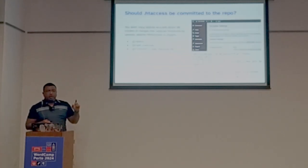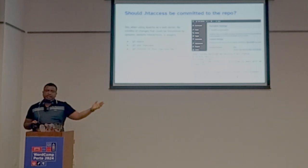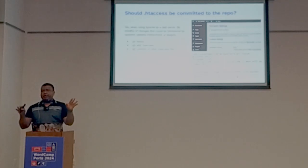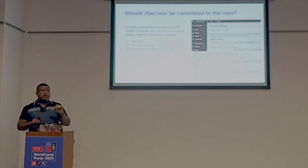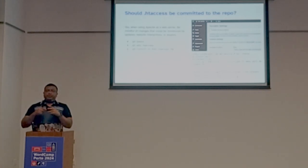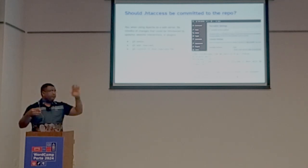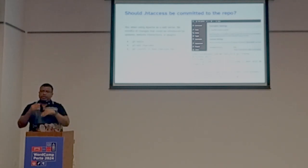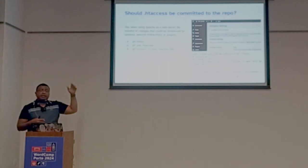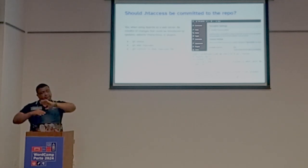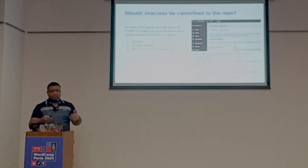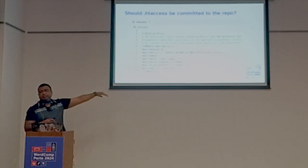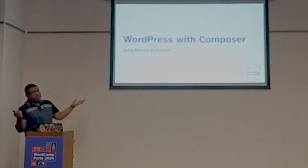What about the htaccess file? This is only relevant if you are using Apache — if you are using Nginx, for example, it is not relevant. If you go to the Permalinks page and save it, even without modifying anything, WordPress will create or overwrite your htaccess file. However, if you add your custom rules before or after the WordPress-generated comments, those rules will be preserved. Git helps you identify if you are accidentally overwriting something you intended to keep.